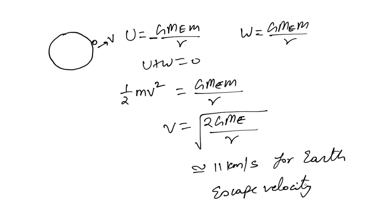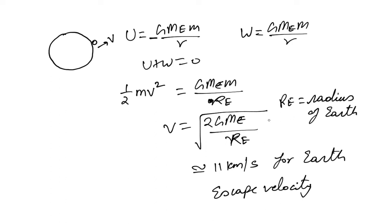The escape velocity depends on the mass of the planet Me and its radius Re. For the moon the escape velocity is much smaller than earth's, and for the sun it is much bigger because the sun is much heavier.